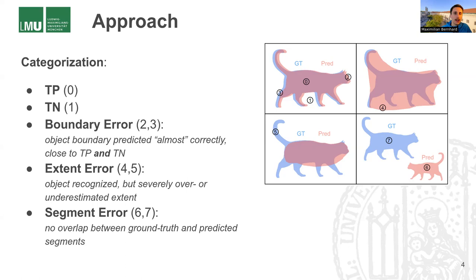Our categories are first, obviously true positives and true negatives. This is nothing new. The examples would be zero and one here. And our first error category is the boundary error. This is supposed to indicate that a model was able to recognize an object correctly and a transition from foreground to background for this class.